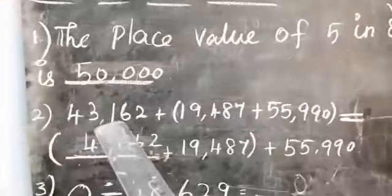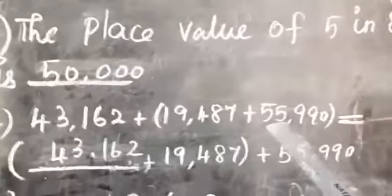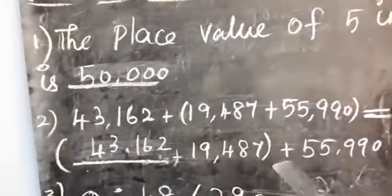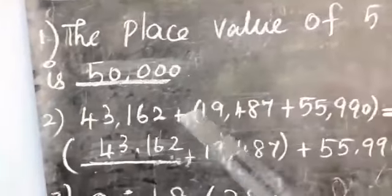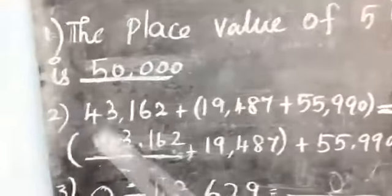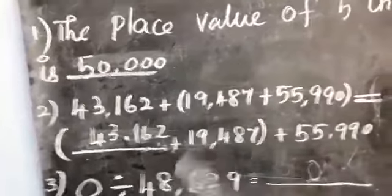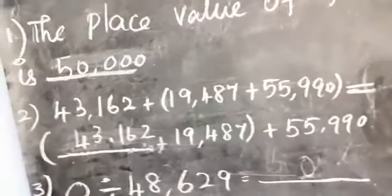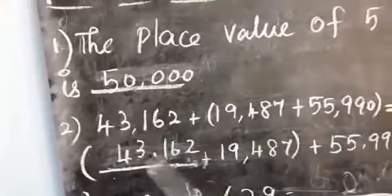Second: 43,162 + 19,487 + 55,990 is equal to dash + 19,487 + 55,990. Look at the first three numbers — we can group the second and third numbers, or the first two numbers in brackets. That is called the grouping property: three numbers added in any order give the same answer. So the answer is 43,162.